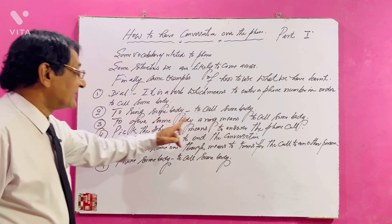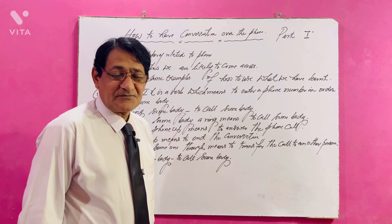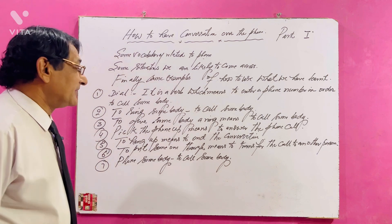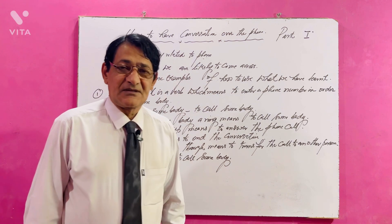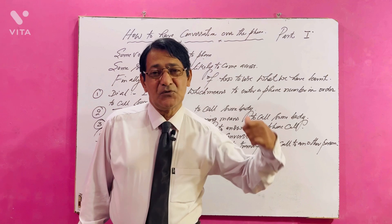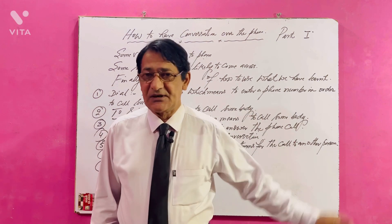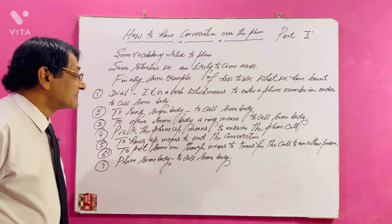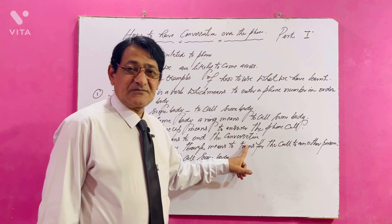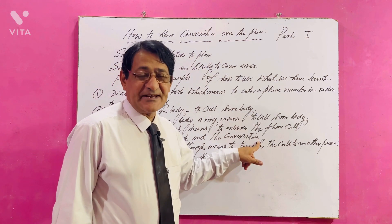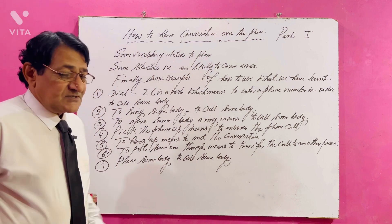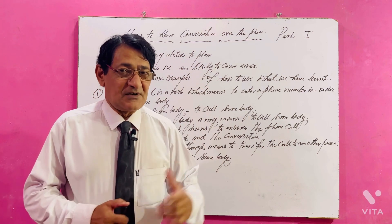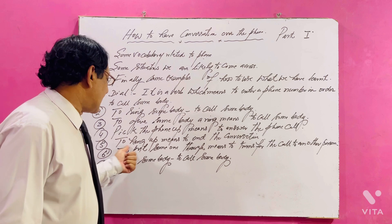'To give somebody a ring' is also a way of calling someone — it means to call somebody. 'To pick the phone up' means to answer the phone call. Suppose your phone rings — you pick the phone up, meaning you are going to answer the call. 'To hang up' means to end the conversation. You have talked to your friend, you want to end your call, so you hang up.